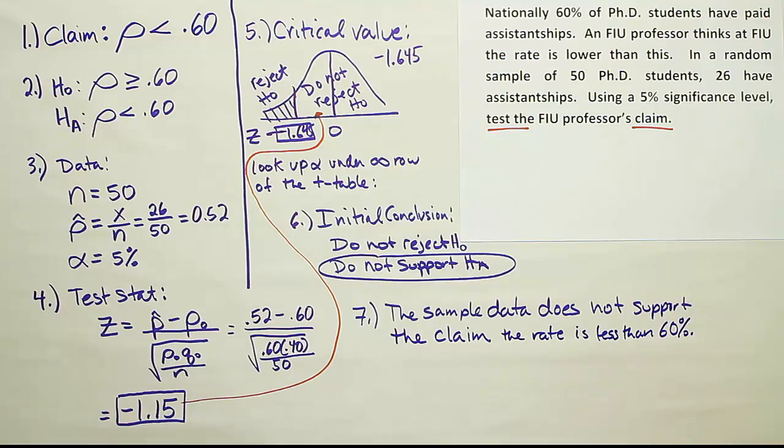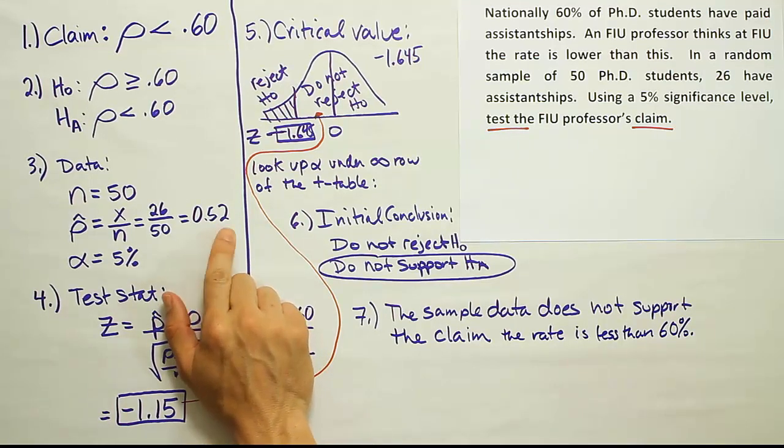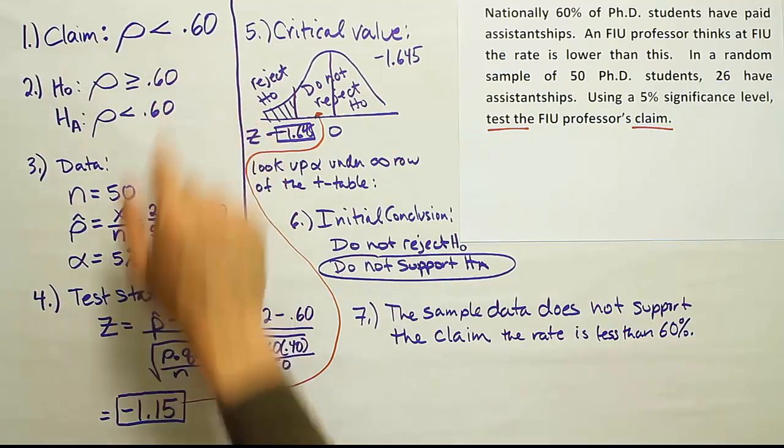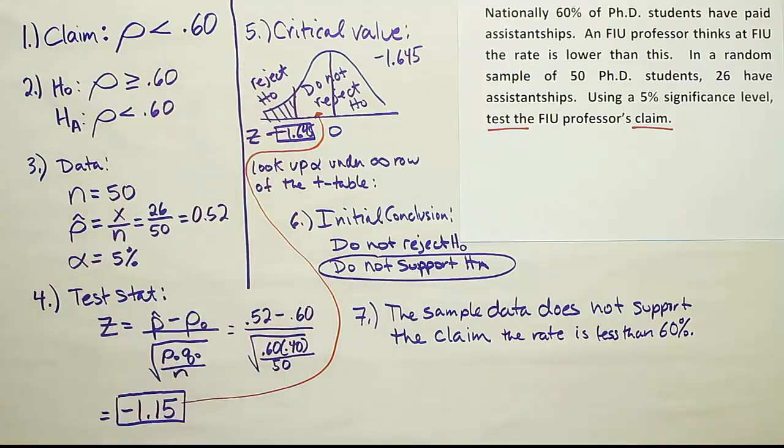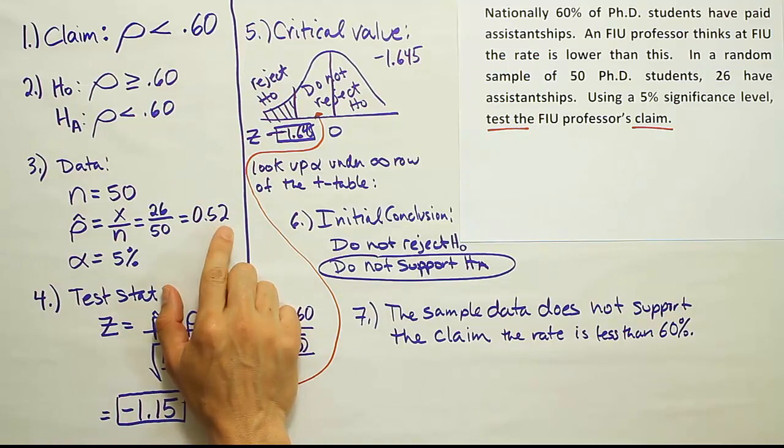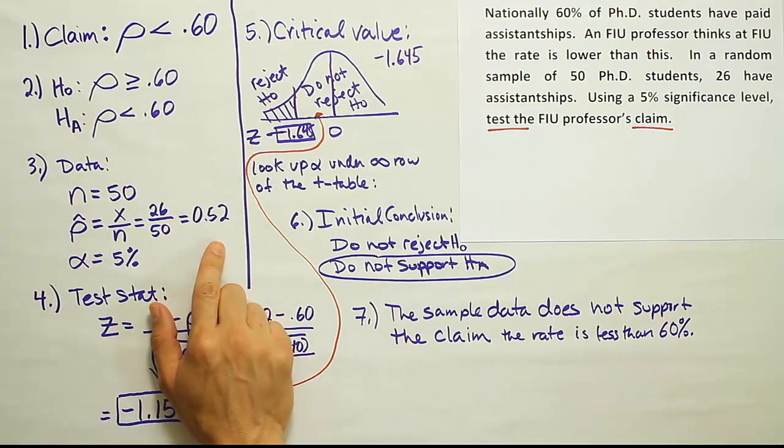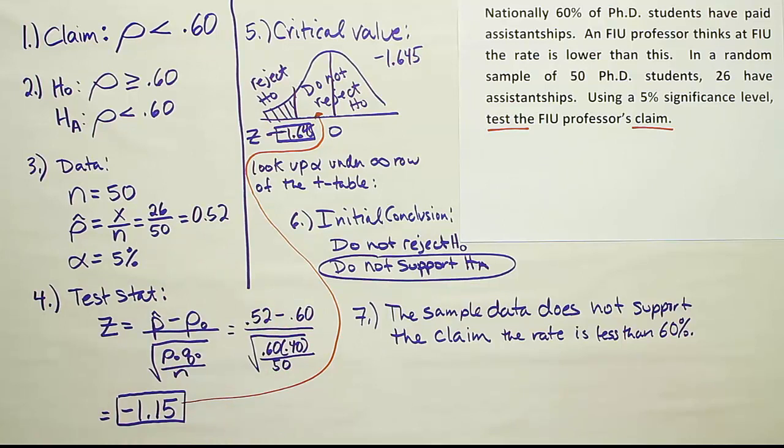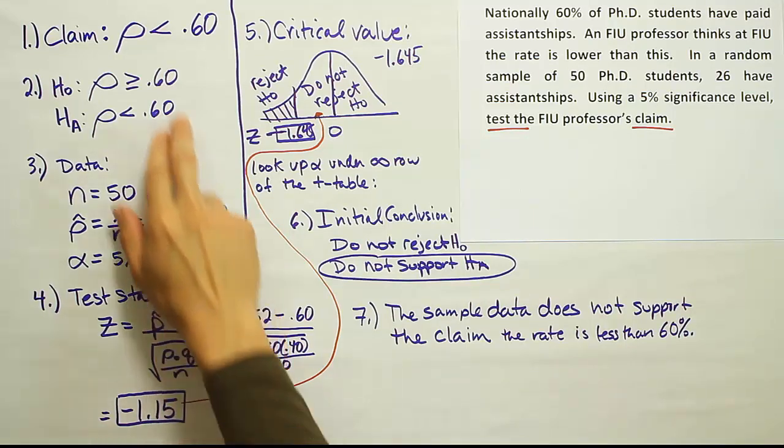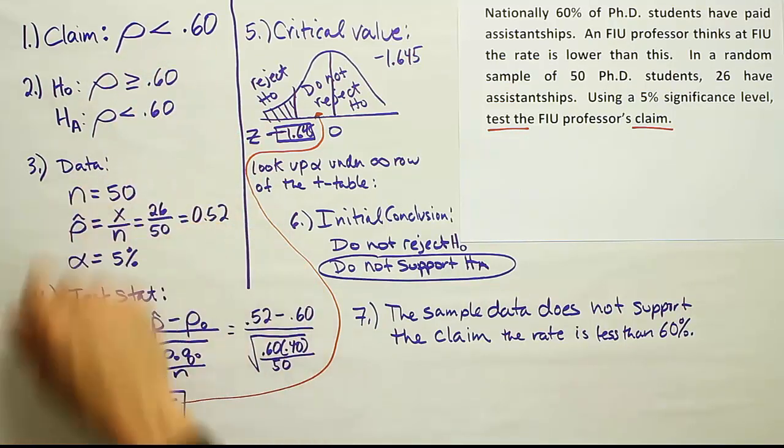So essentially what's happened here is that even though there's a lower percentage of assistantships from the sample data than we expected, because we expected that it would be 60%, the national percentage, even though our rate at FIU is lower than that, essentially it's not low enough that we can reject the possibility that it is still equal to 60%. Remember, a random sample will have fluctuation due to random sampling error. So the fact is that this data is not extreme enough for us to assume that the professor's claim is correct. So essentially we're saying that it may be less than 60%, but this data is not strong enough to support that.